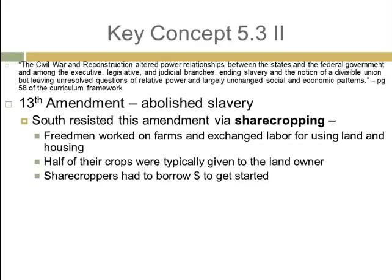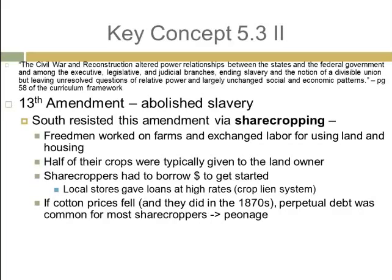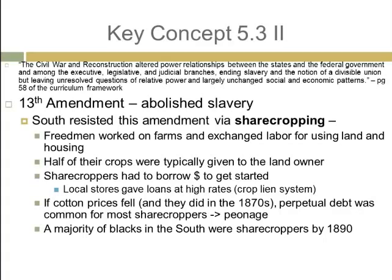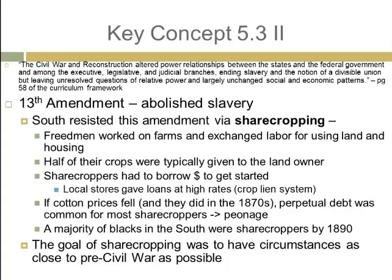Most sharecroppers had little money in their first year, so they would go to a store and take out loans at very high rates — this was called the crop lien system, with interest rates as high as 50 to 60 percent. When cotton prices fell in the 1870s, this led to perpetual debt for most sharecroppers, which then led to peonage — being forced to work to pay off their debt. The majority of blacks in the South were sharecroppers by 1890. Even though slavery was outlawed, many blacks were forced to work under conditions not too far from slavery. The goal of sharecropping was to have circumstances as close to pre-Civil War as possible.